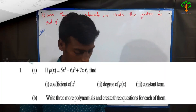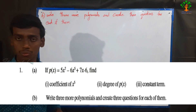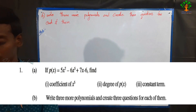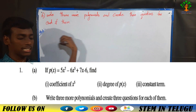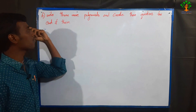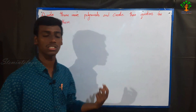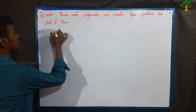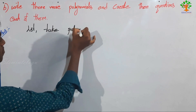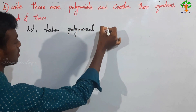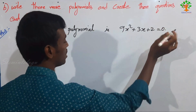Next, the second sum: write three polynomials and create three questions for each of them. Let's take a polynomial: P of x is equal to 9x squared plus 3x plus 2. This is a polynomial.